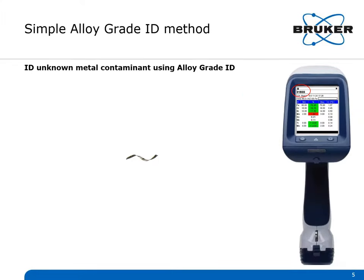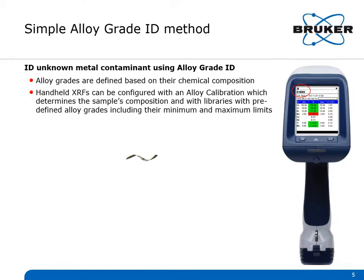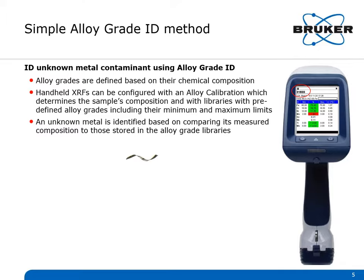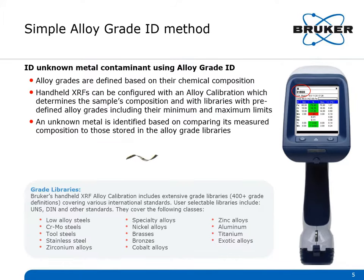XRF identifies a metal contaminant's alloy grade because alloy grades are defined based on their chemical composition — which elements they contain and at what concentrations. Handheld XRFs can be configured with an alloy calibration that determines the sample's composition and has libraries with predefined alloy grades, including their minimum and maximum limits. The grade libraries are extensive, covering hundreds of grade definitions across multiple international standards including UNS, DIN numbers, and other standards, as well as multiple classes of alloys.